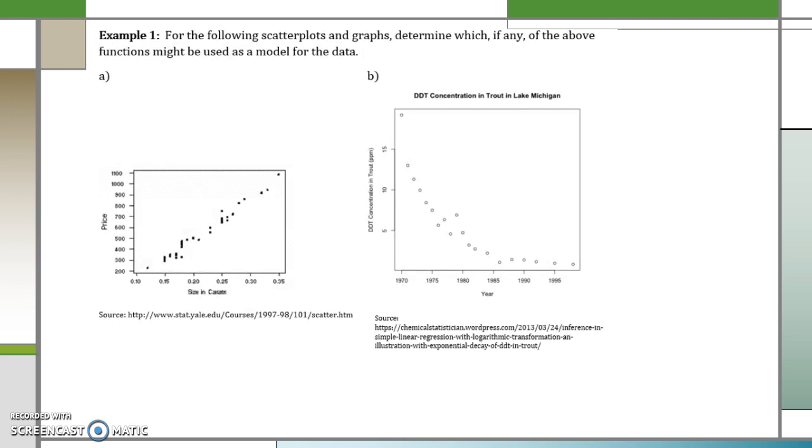For the following scatter plots and graphs, determine which if any of the above functions might be used as a model for the data. Looking at part a, if I were to draw a line of best fit that shows the direction in which our graph is going, I would say that our graph is definitely a linear based model.